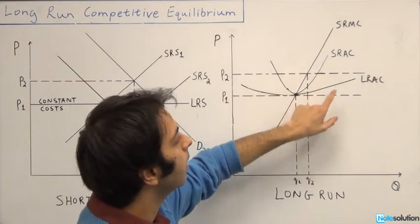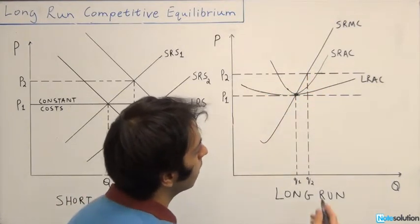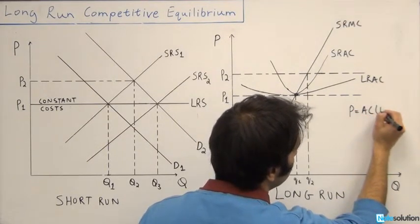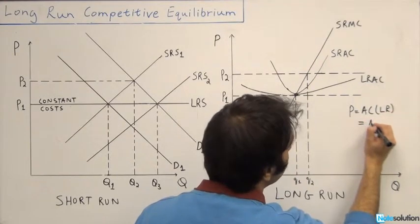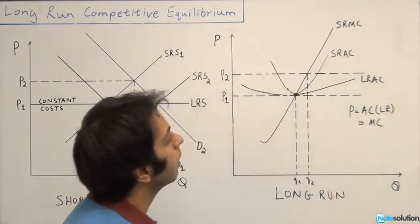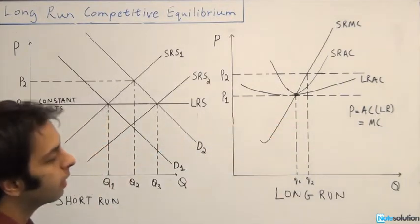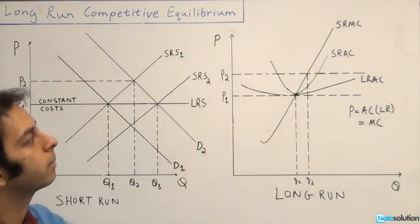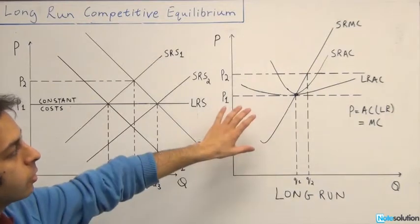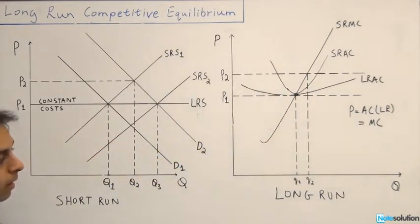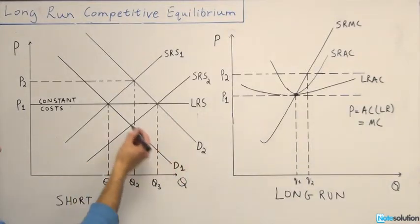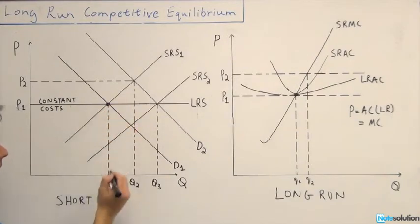That's how you want to show the curves. In equilibrium, price equals long-run average cost, which also equals marginal cost at that particular point. When drawing all these curves, make them neat and label them clearly so the marker can understand. The equilibrium quantity is shown where D1 and S1 intersect, giving you Q1 and P1 as your initial price and quantity. The long-run quantity is also Q1 at price P1, where all the relevant curves intersect.